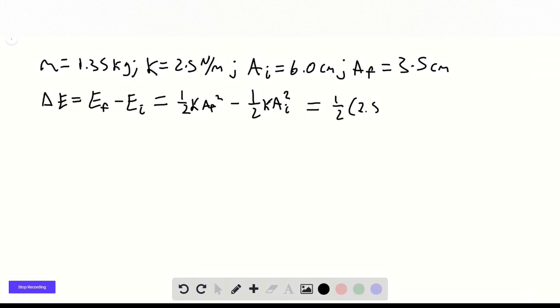Oh sorry, the 2.5 is newtons per centimeter, so this is really 255 newtons per meter. And then A_final is 0.035 meters squared minus 1/2,